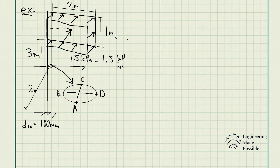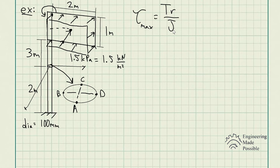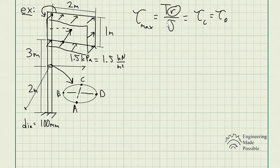The wind loading will push the sign and cause the post to rotate, developing shear stress due to torsion. The maximum shear stress due to torsion is τ = Tc/J, where T is the torque, c is the radius, and J is the polar moment of inertia. Both points C and D are at the outer surface of the circular post, so they use the same radius value, giving the maximum torsional shear stress.